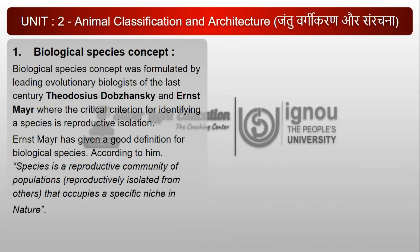1. Biological Species Concept: The Biological Species Concept was formulated by leading evolutionary biologists of the last century, Theodosius Dobzhansky and Ernst Mayr, where the critical criterion for identifying a species is reproductive isolation. Ernst Mayr has given a good definition for biological species. According to him, a species is a reproductive community of populations, reproductively isolated from others, that occupies a specific niche in nature.